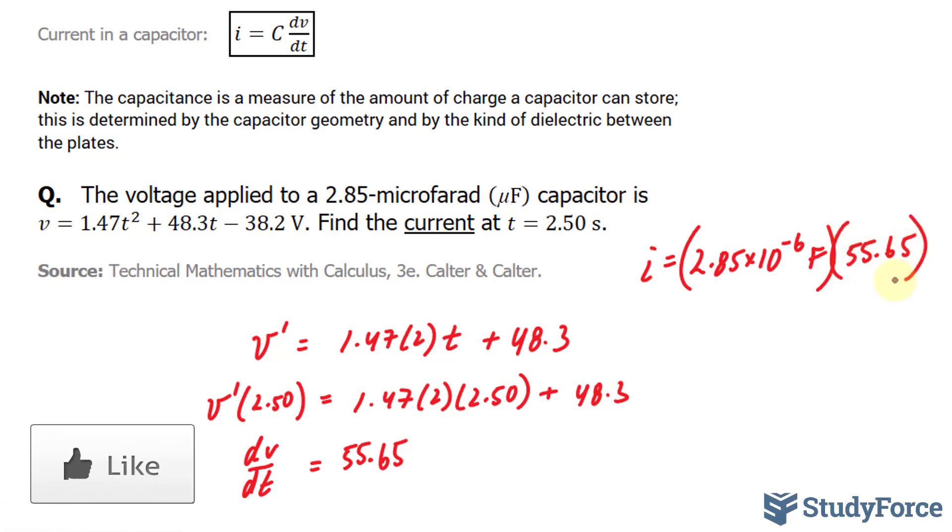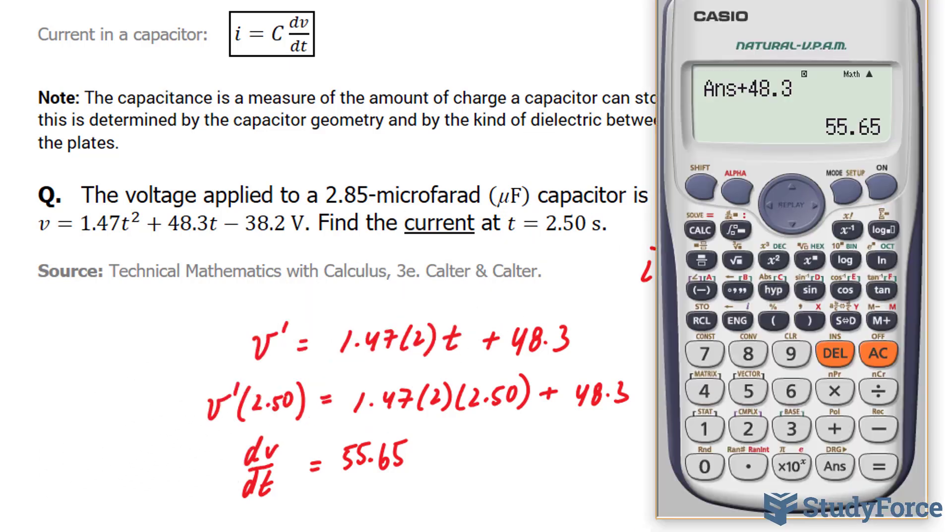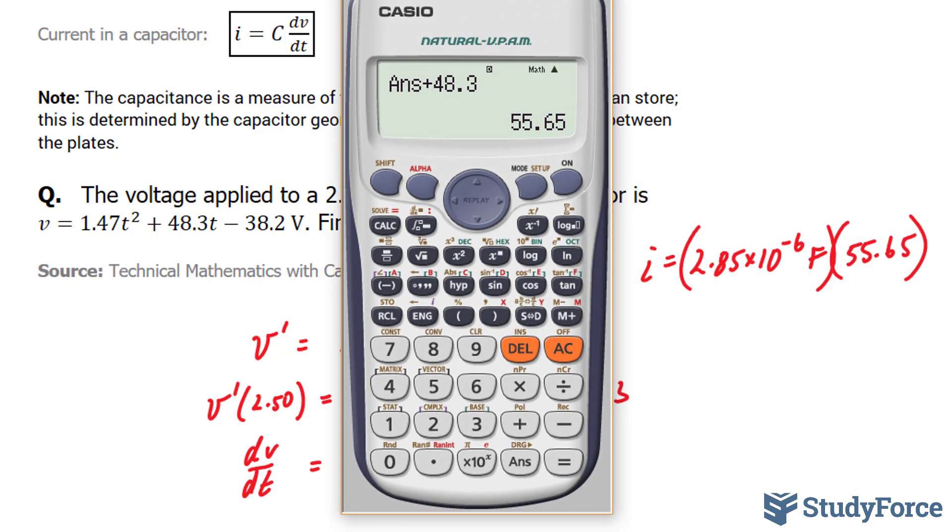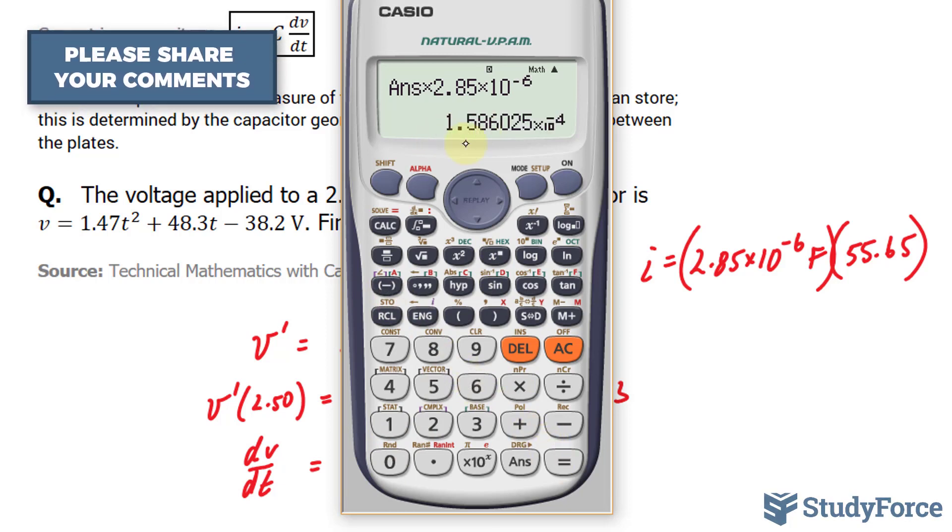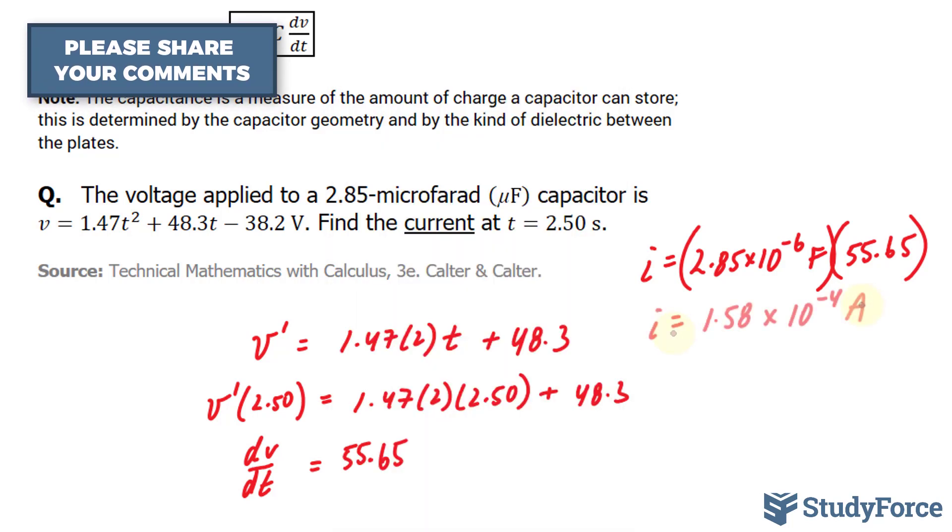Our final answer should have its units in amperes, which is the letter A. Let's use our calculator once more. Taking this number and multiplying it by 2.85 times 10 to the power of negative 6, that gives us 1.58 times 10 to the power of negative 4. That's in scientific notation.